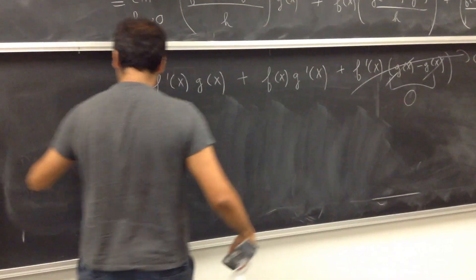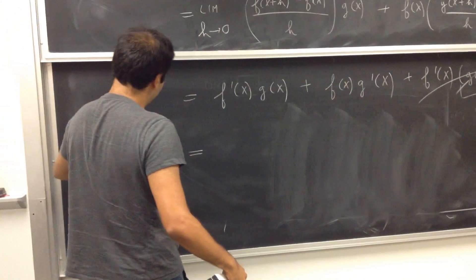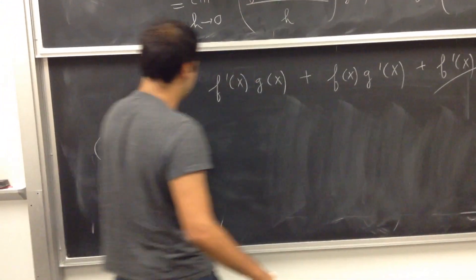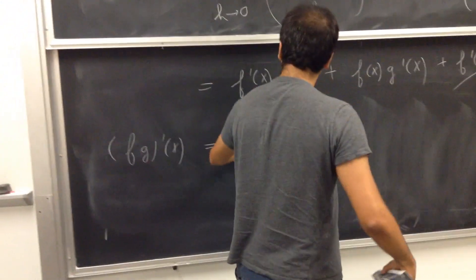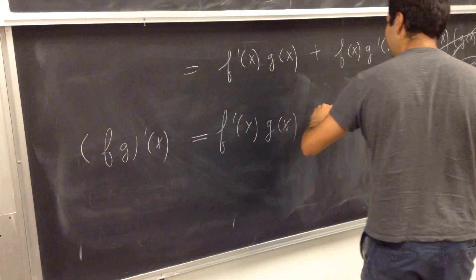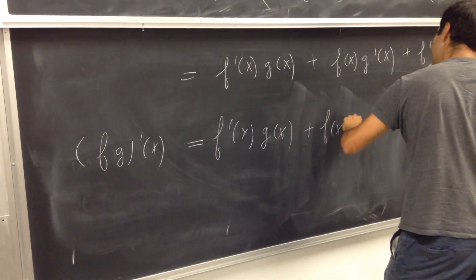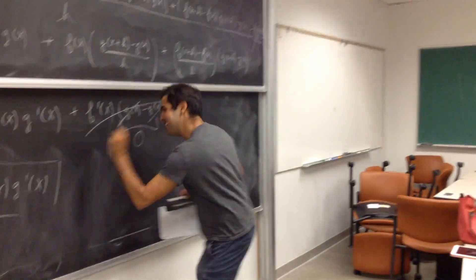And we are left with - remember what we wanted to calculate - f g prime of x. And we find that, lo and behold, that equals f prime g of x plus f of x g prime of x. And we are done.